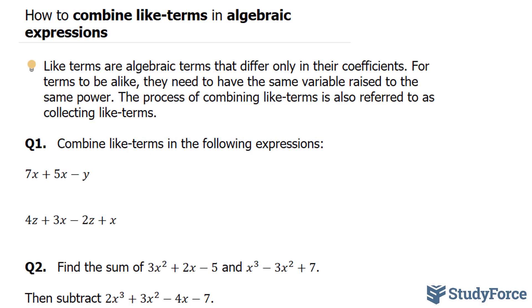In this lesson, I'll show you two examples on how to combine like terms in algebraic expressions. Like terms are algebraic expressions that differ only in their coefficients. For terms to be alike, they need to have the same variable raised to the same power. The process of combining like terms is also referred to as collecting like terms.